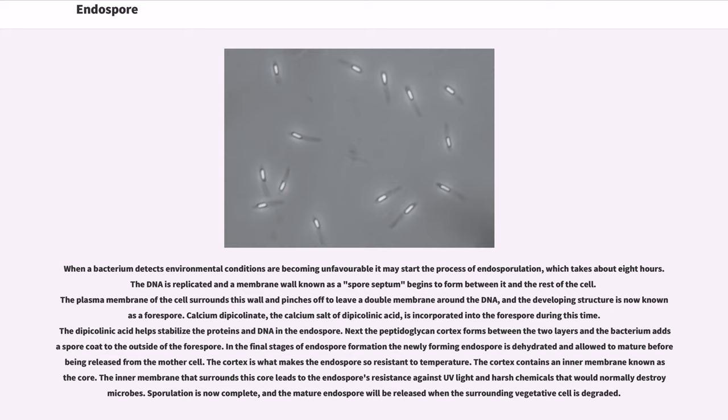Next the peptidoglycan cortex forms between the two layers and the bacterium adds a spore coat to the outside of the forespore. In the final stages of endospore formation the newly forming endospore is dehydrated and allowed to mature before being released from the mother cell. The cortex is what makes the endospore so resistant to temperature. The cortex contains an inner membrane known as the core. The inner membrane that surrounds this core leads to the endospore's resistance against UV light and harsh chemicals that would normally destroy microbes. Sporulation is now complete.